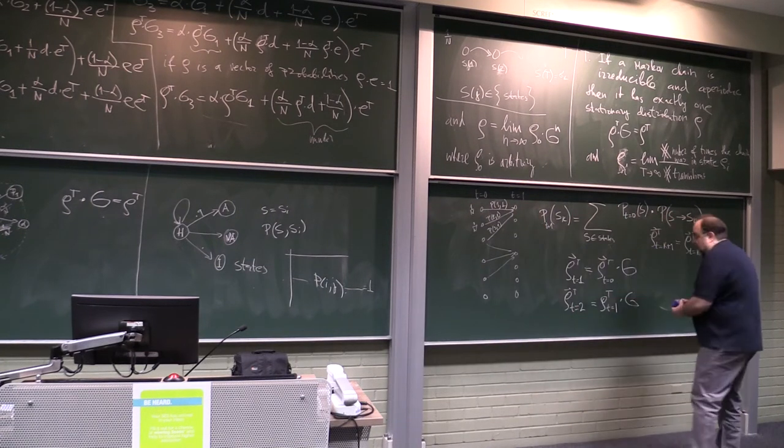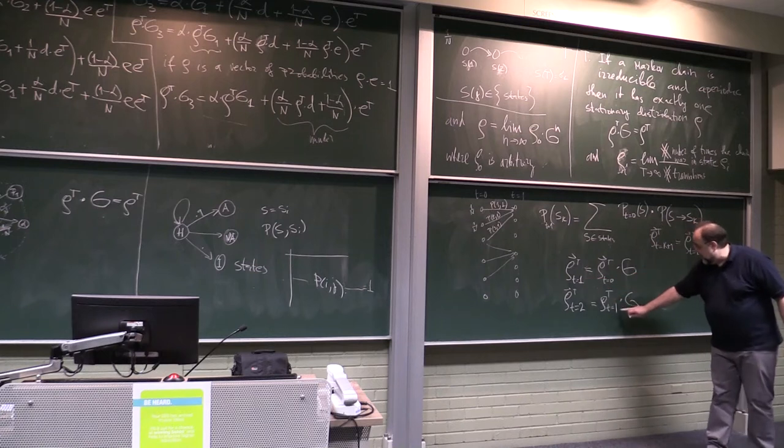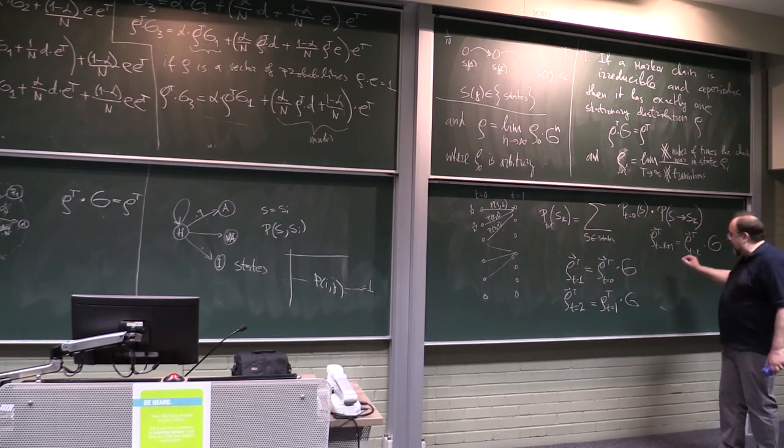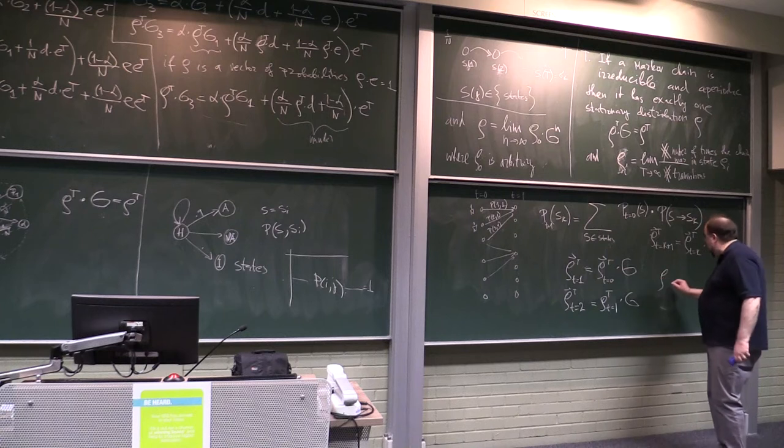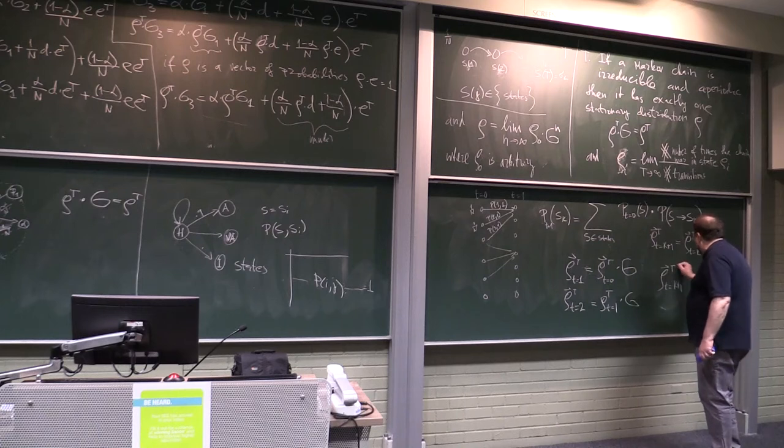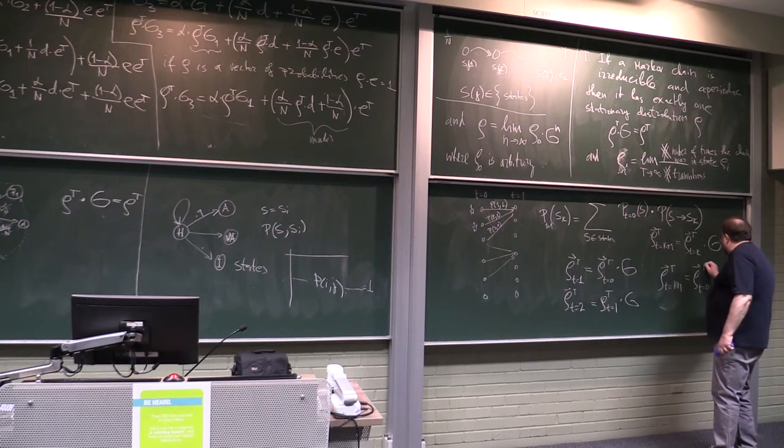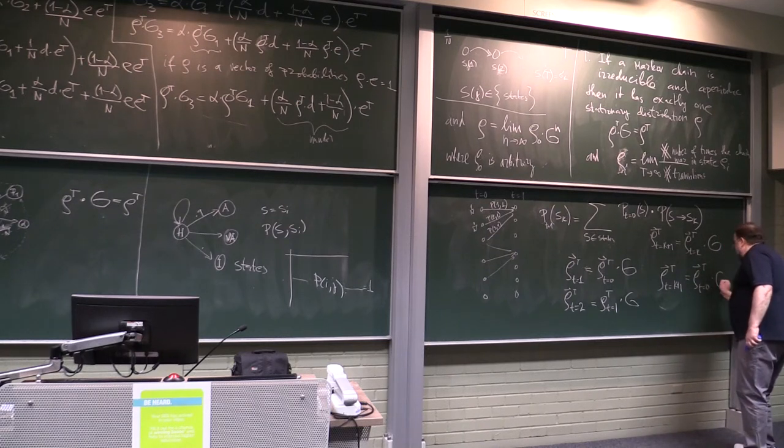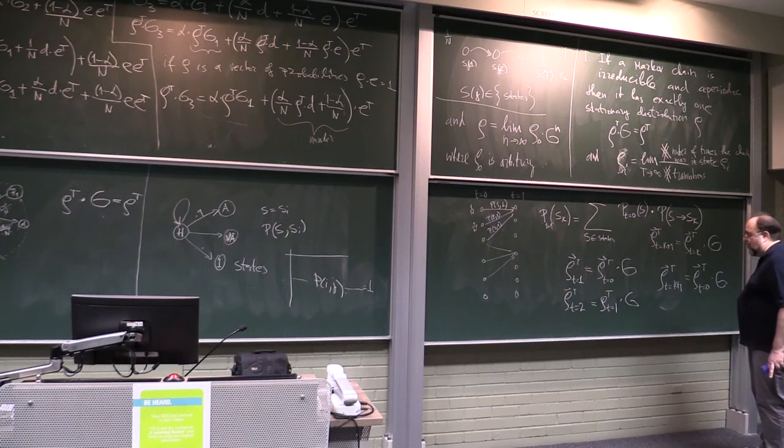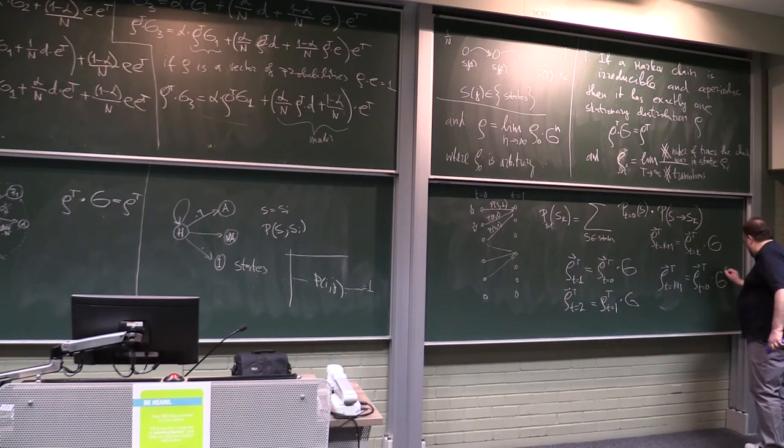So, and this tells you how the Markov chain is evolving when we increment by 1. But now, I can simply replace this here and do the chain and it's easy to see, right? What do we get? That ρ t equals to k plus 1 of t is equal ρ t equals to 0 transpose times g on what power? It will be power k or k plus 1?